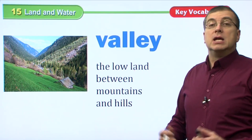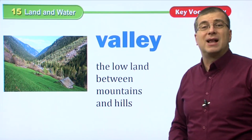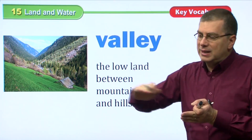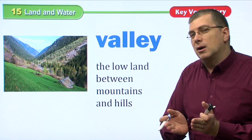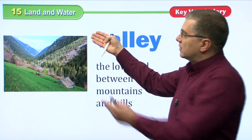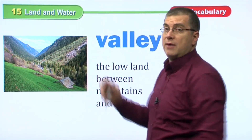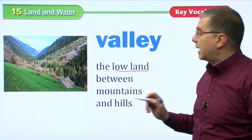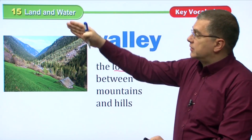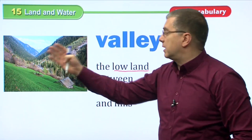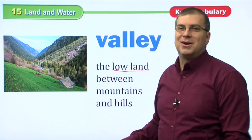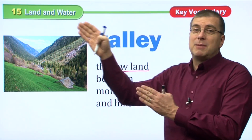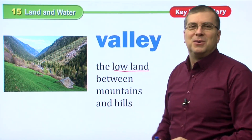We also have valleys. You wouldn't find valleys on plains because plains are very flat. You find a valley in the mountains — on either side you have mountains, and between them you have a valley. A valley is the low land between mountains and hills. Some valleys are very beautiful, and they provide an easier way to get up into the mountains than climbing up the steep sides.